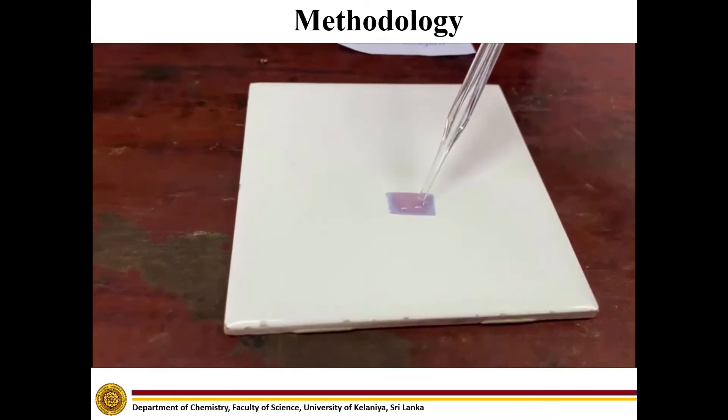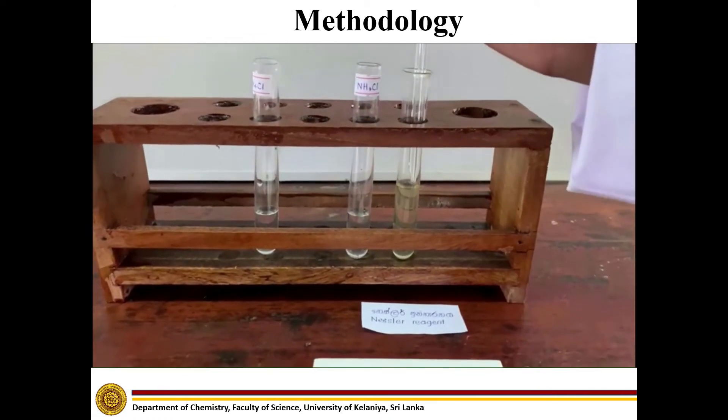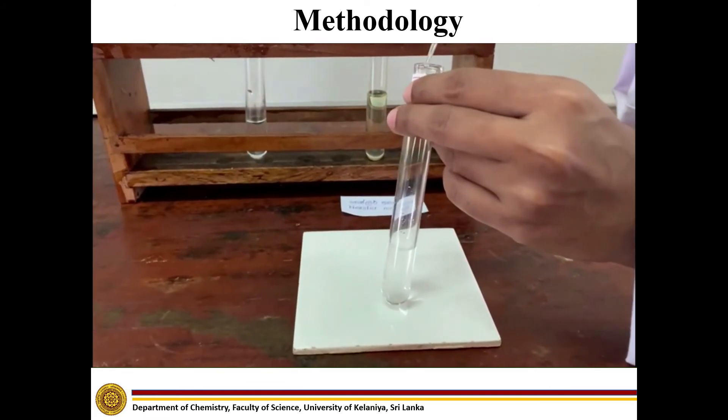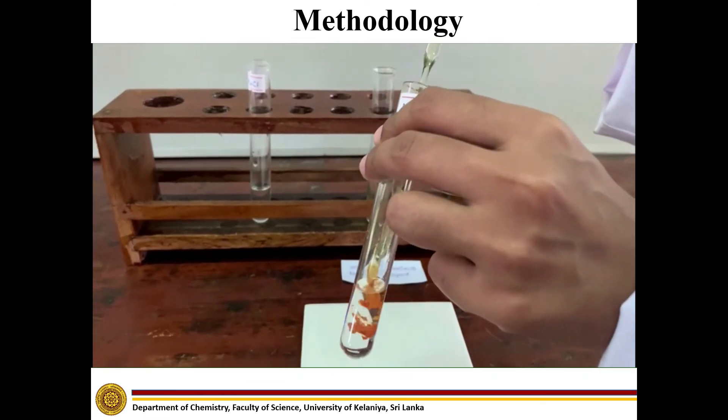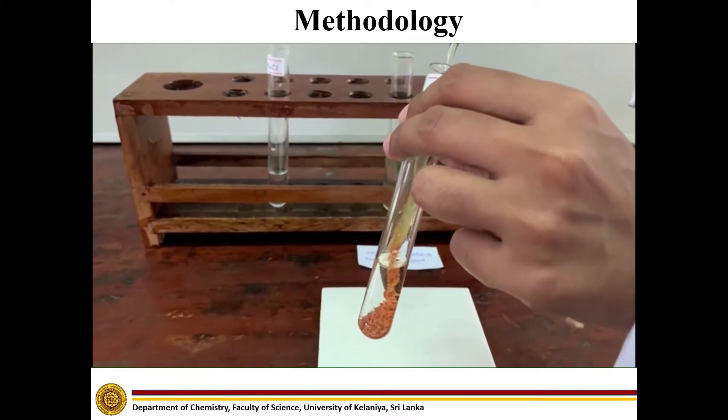It turns red litmus into blue. With Nessler reagent, brown color precipitation is observed.